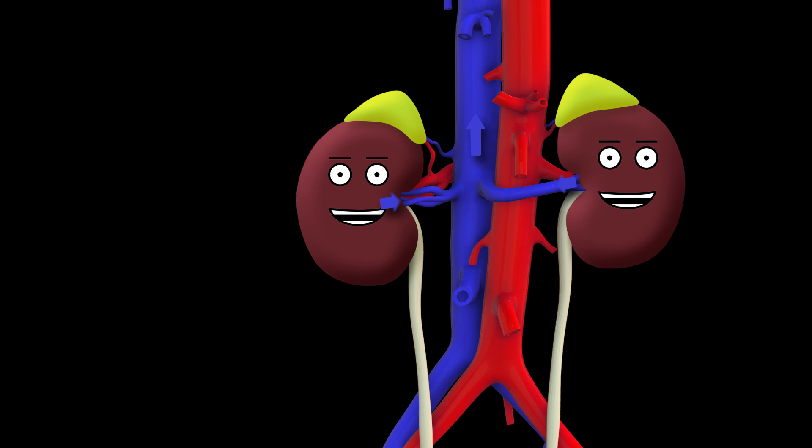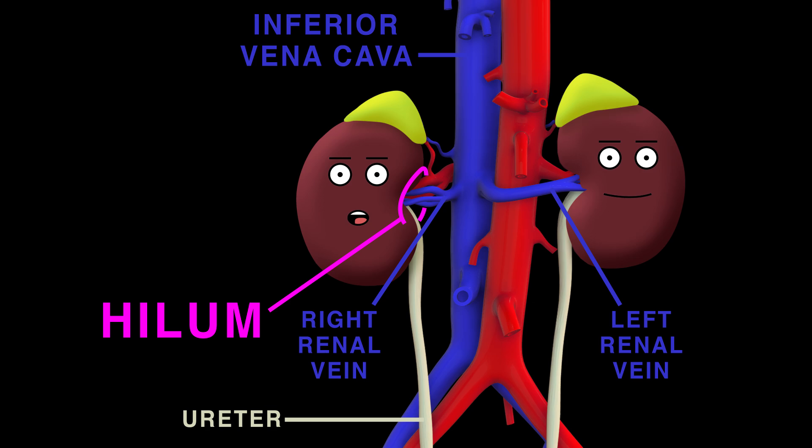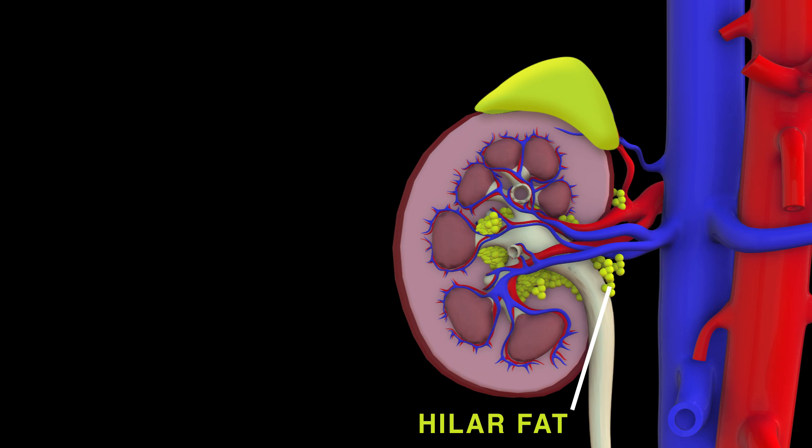The hilum lets blood vessels, nerves and the ureter pass through. Hilar fat and lymphatic tissue enclose your ureter and vessels. And a fat-filled cavity, the renal sinus, next to hilar fat vessels.